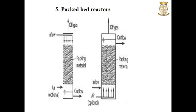In a packed bed bioreactor, the microbial cells or enzymes are immobilized on larger particles. These particles cannot move with the liquid — they are either packed or settled in the fermenter. A nutrient media flows continuously over these packed particles so that the media contents are utilized by the immobilized cells or enzymes trapped in the packing material, and the products are released into the fluid. The flow of liquid may be either upward or downward. An example of a packed bed bioreactor is the trickling bed reactor, which is used in wastewater treatment.